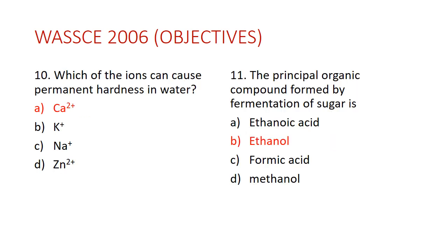Question ten: which ions cause permanent hardness in water? The answer is calcium²⁺ ions. Permanent hardness is caused by the presence of calcium²⁺ and magnesium²⁺ ions. Hard water does not lather easily with soap because of these ions. Ions like potassium K⁺ and sodium Na⁺ do not cause hardness.